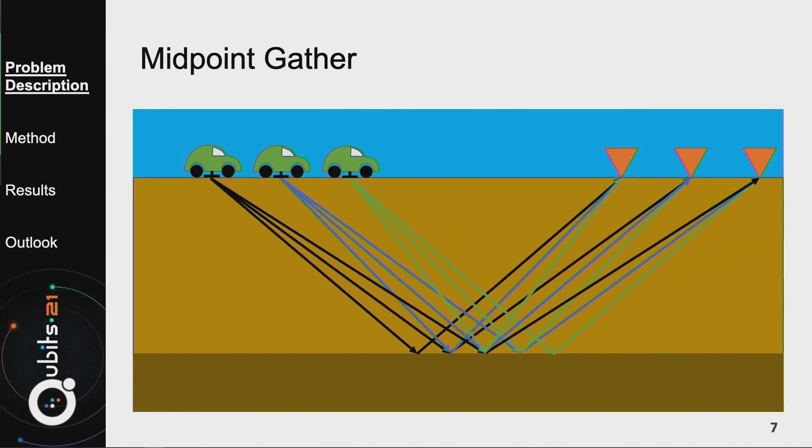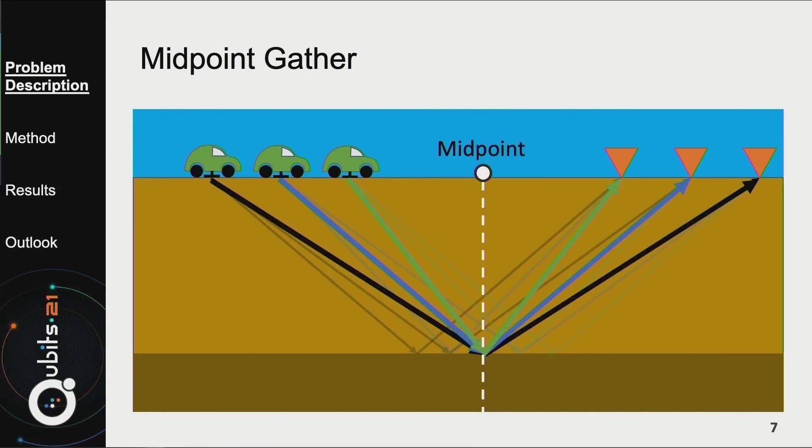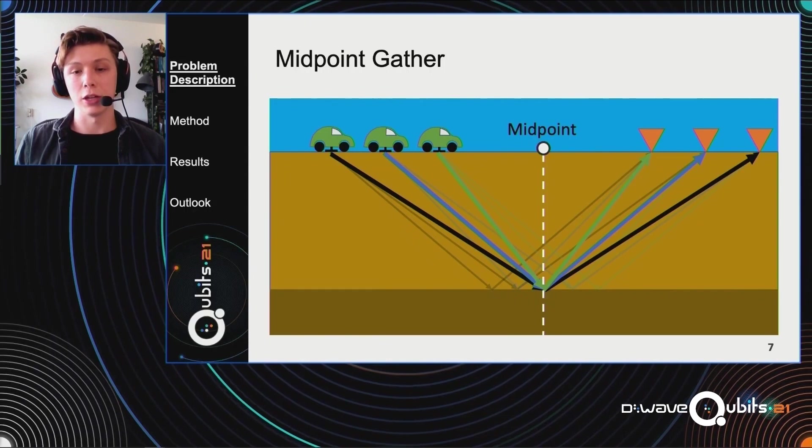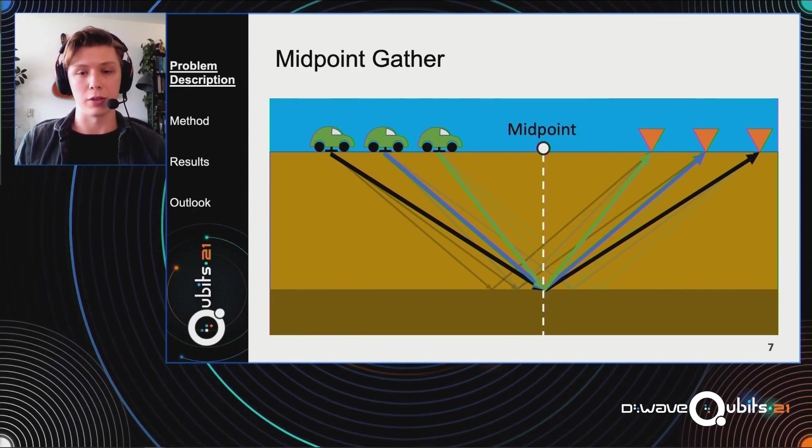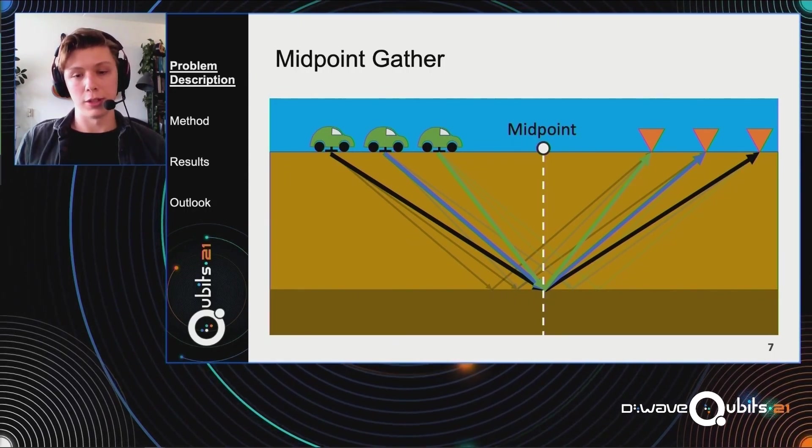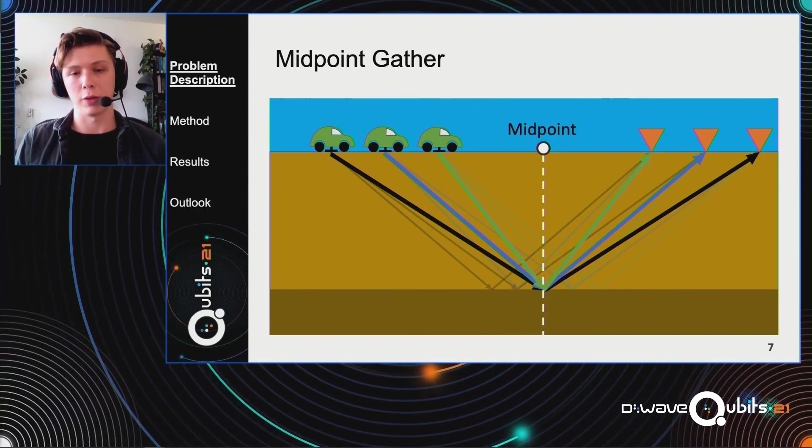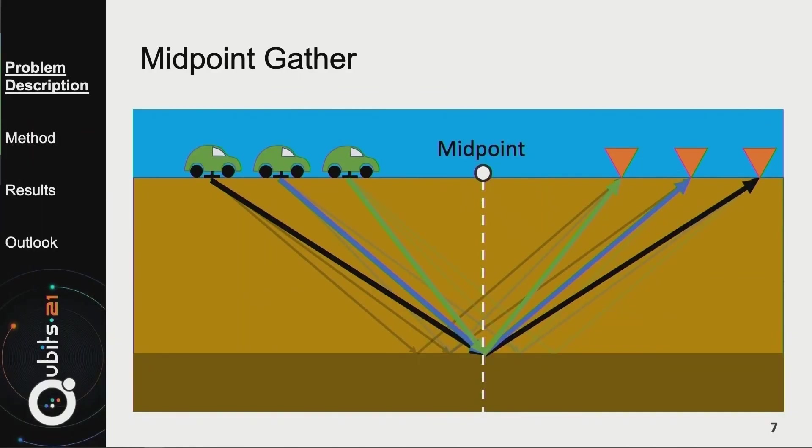This can also happen because of some salt deposits or some caves, and these all shift the whole trace by a tiny amount, and that is called a static. This might seem like a small problem. However, because the waves move so slowly through this near surface, even when it's very thin, it's going to have a substantial result on the final image. So how are we going to resolve this problem? For that, we're going to use what's called a midpoint gather.